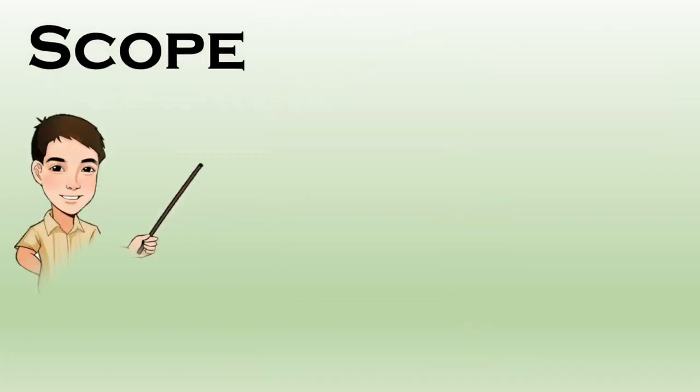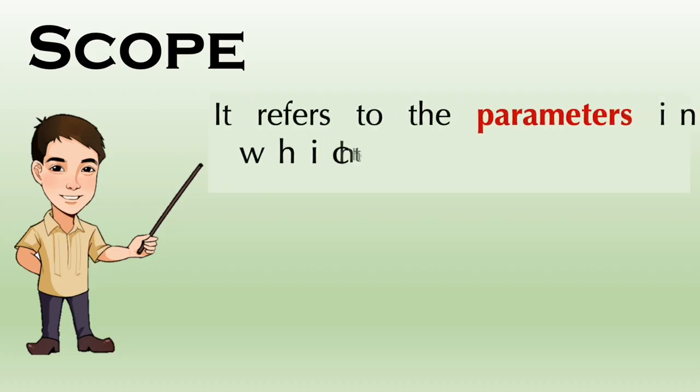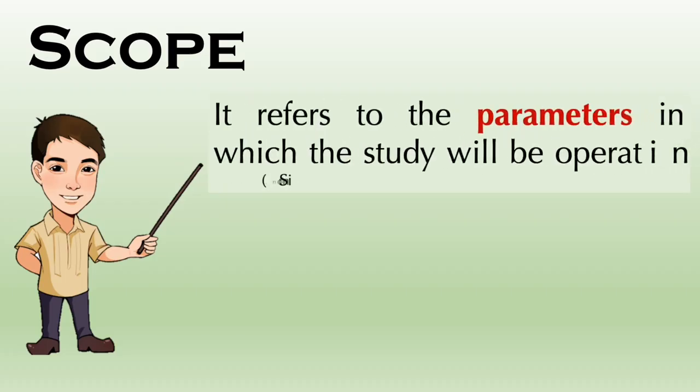Let us first define what is a scope. Scope of the study refers to the parameters under which the study will be operating, meaning a researcher needs to clearly articulate the domains of the projects and also in this section, he or she needs to state the factors that are within the accepted range of the research project.